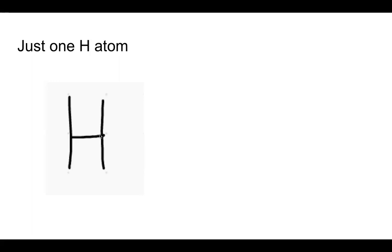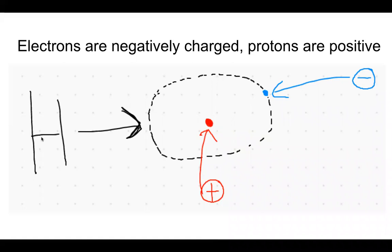This is just one H atom. A reminder that H atoms are comprised of, they are made up of protons and electrons. We just draw the symbol H because that's the fast way of doing it. As a reminder, it's got a positive proton and a negative electron inside of it.